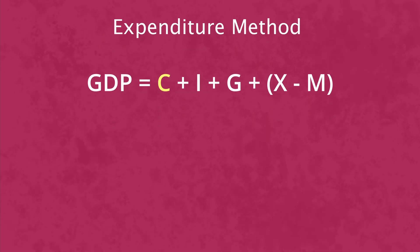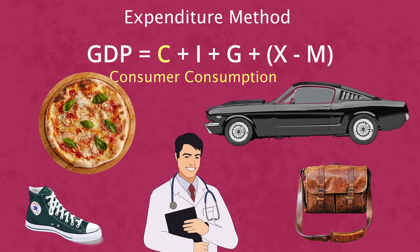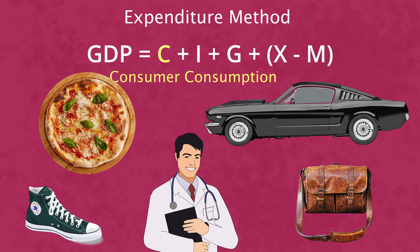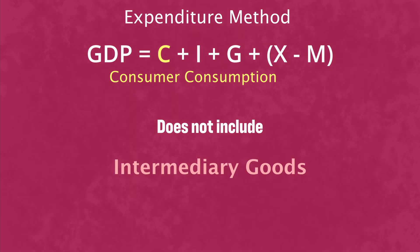Here, C stands for consumer consumption of all finished goods and services in the country. This is anything bought by the general public. This, however, does not include intermediary goods.